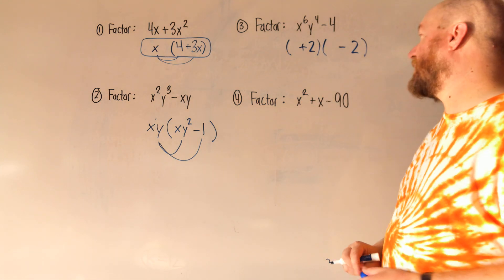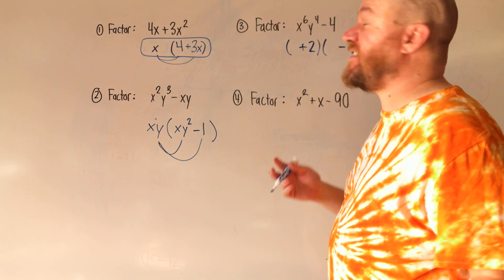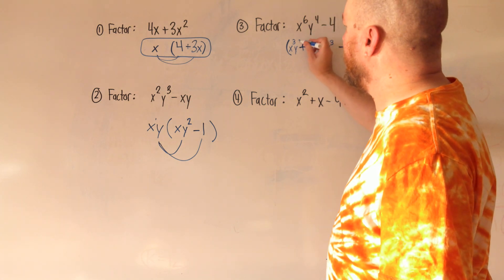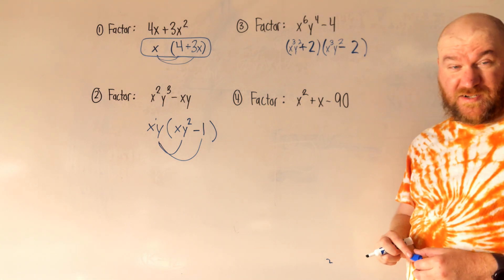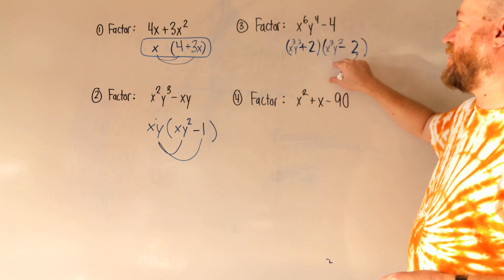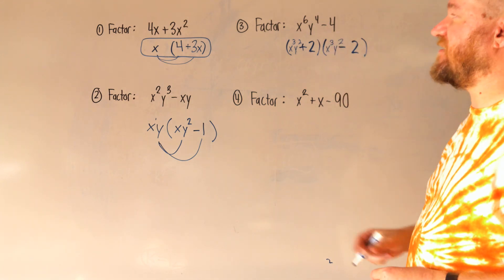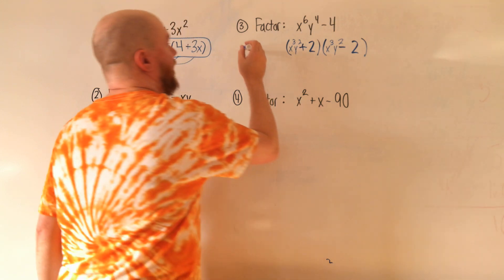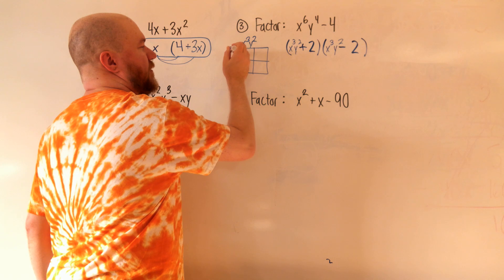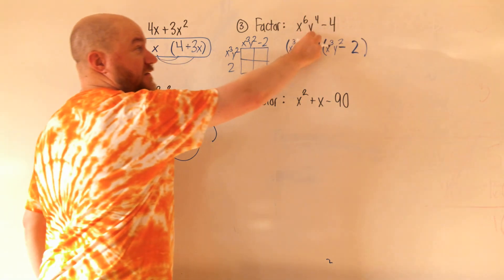Two times two is four, so we write two in each group. Then in the front, we write the square root of x⁶y⁴. Since I have six x's, I put half — x³ — in each group. And y to the second in both groups. So the answer is (x³y² + 2)(x³y² − 2). If you don't believe this factors correctly, let's verify by box method: multiplying x³y² by x³y² gives x⁶y⁴. Multiplying x³y² by negative two and positive two by x³y² gives the cross terms.